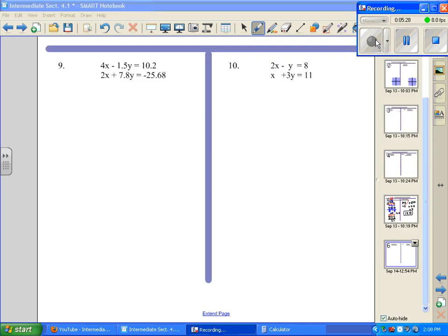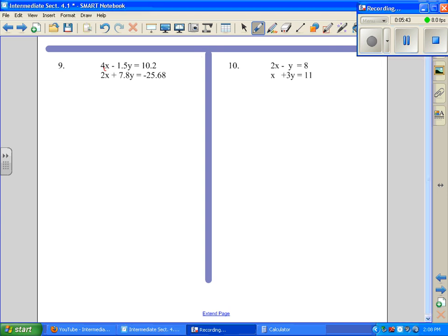Number 9, I'm going to use elimination and get rid of decimals first. When I evaluate equation 1, I see one decimal place here, one here. If I move the decimal one place to the right in every position, it gets rid of the decimals. That's like multiplying everything by 10. So we have 40x minus 15y equals 102.